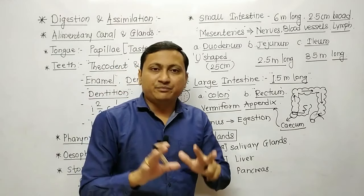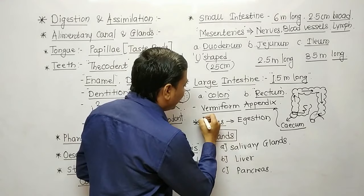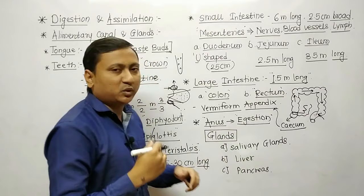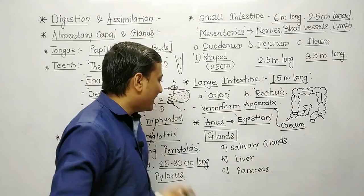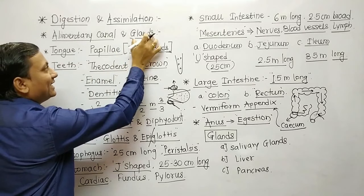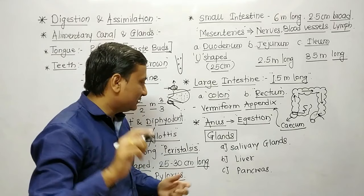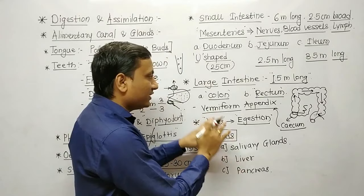The last part of the alimentary canal is the anus. The anus is responsible for egestion, which is the process by which undigested food is thrown outside the body.